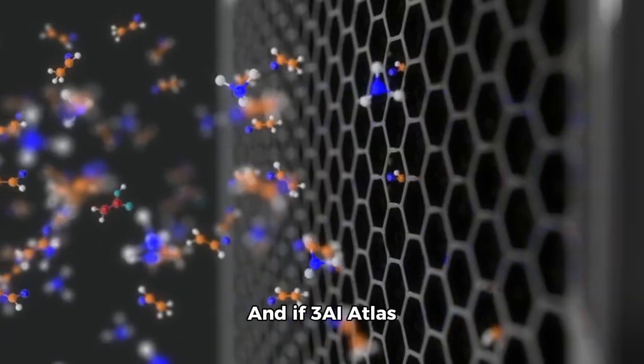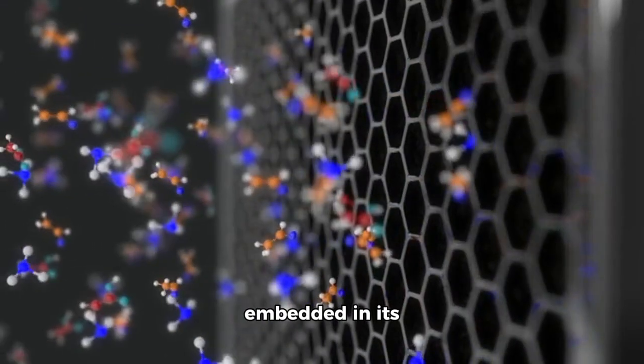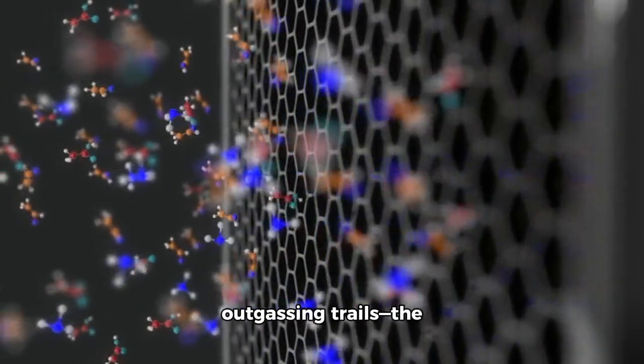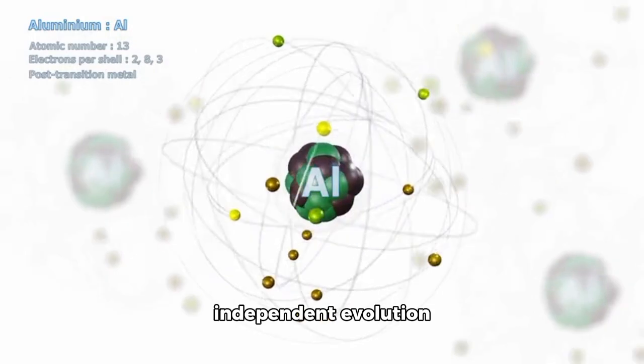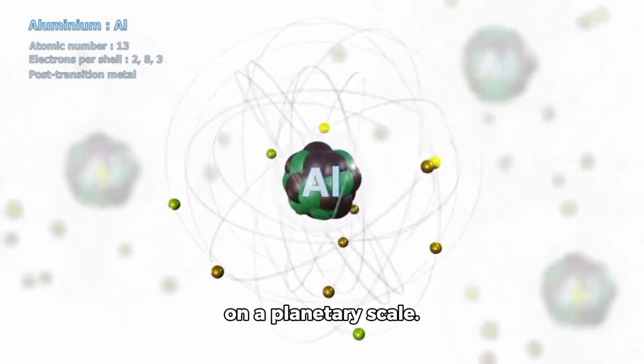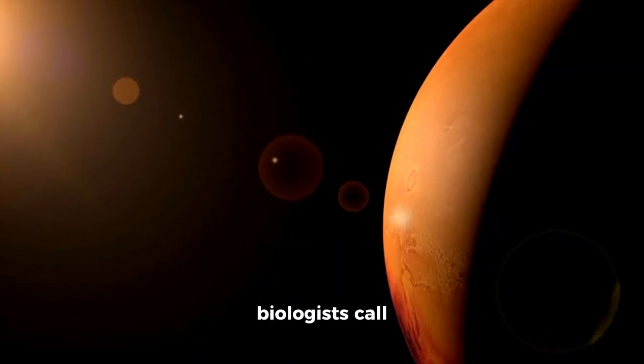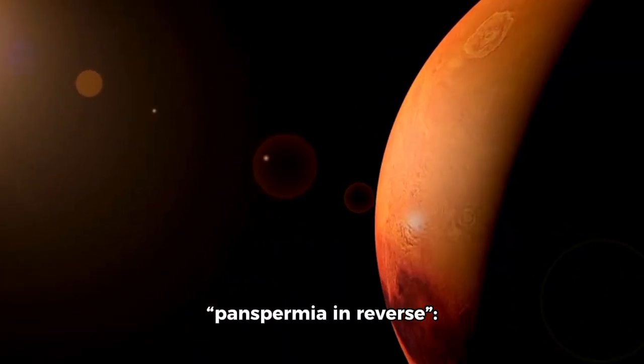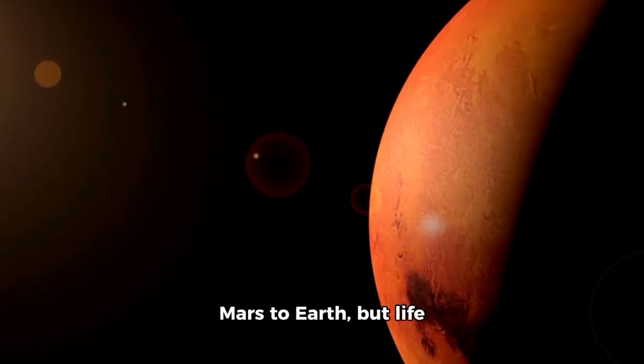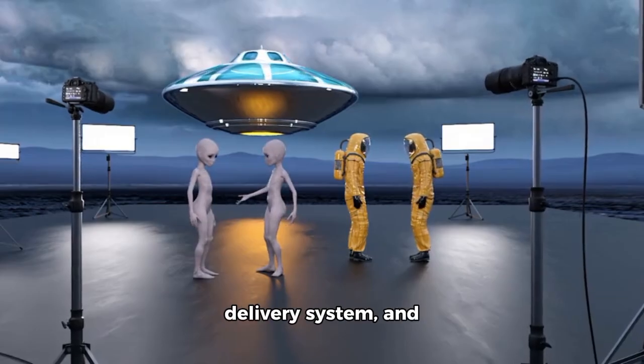And if 3AA Atlas transports organic molecules, or worse, synthetic biology embedded in its outgassing trails, the fusion of Earth-independent evolution with Martian biology could result in genetic contamination on a planetary scale. This is what some biologists call panspermia in reverse—life not spreading from Mars to Earth, but life being seeded into Mars deliberately. It raises a terrifying question: what if the goal was never destruction? What if the object is a delivery system, and Mars the incubator?